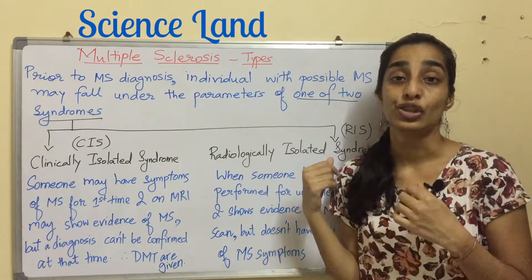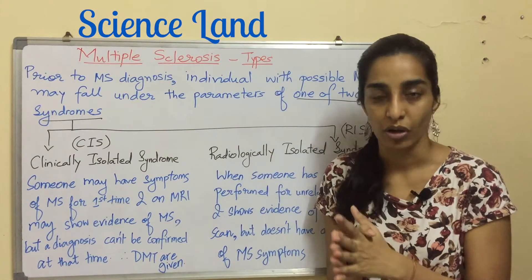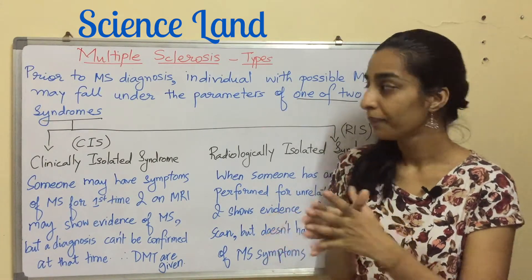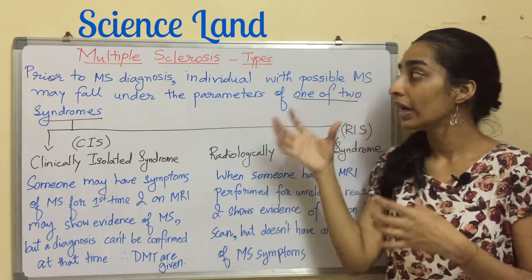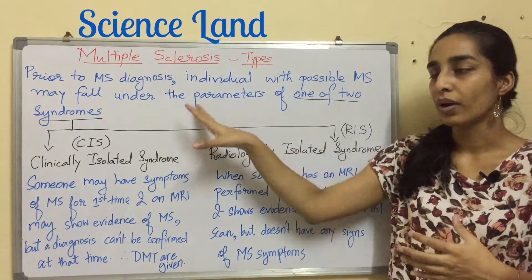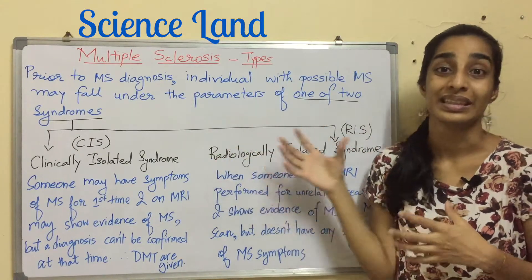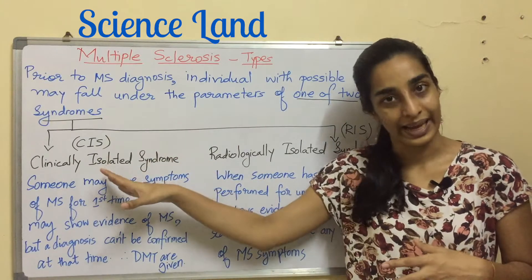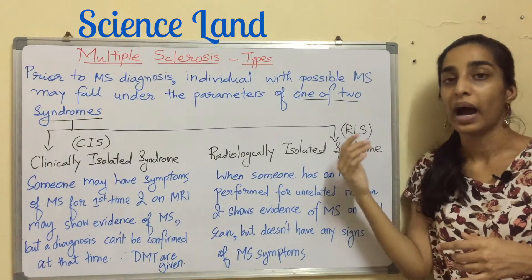Generally, the types of multiple sclerosis come into the picture after the diagnosis is confirmed for an individual. Prior to the multiple sclerosis diagnosis, the individual with possible multiple sclerosis may fall under the parameters of one of two syndromes. The first is clinically isolated syndrome, CIS, and the second is radiologically isolated syndrome, RIS.